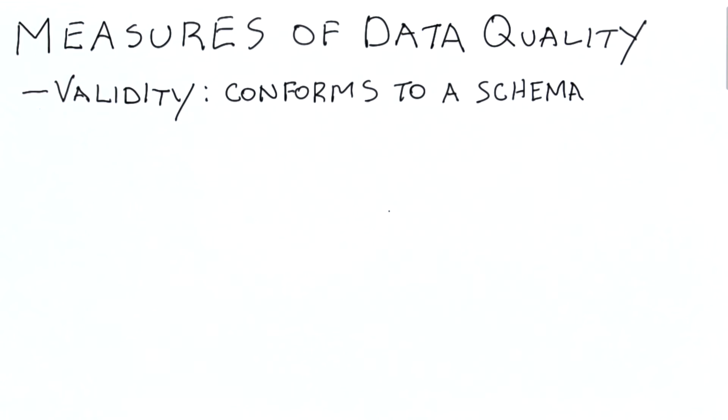So first, let's talk about validity. With validity, we're measuring the degree to which entries in our data set conform to a defined schema or to other constraints we might have. As we move through this lesson, we'll discuss each of these in more detail. Here I'm just going to provide an overview.